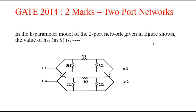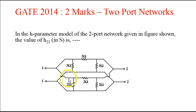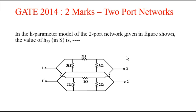For the H parameter model of this two port network, we have to determine the value of H22. If we see this network, we find it has two pi networks which are connected in parallel. This is one pi network and the other is another pi network — both are connected in shunt. When networks are connected in shunt, the best way to simplify such networks is to use the admittance parameters.